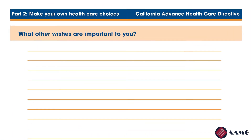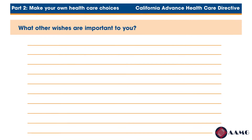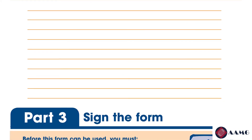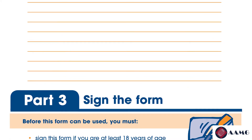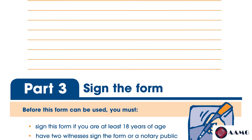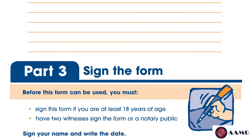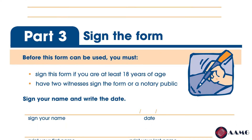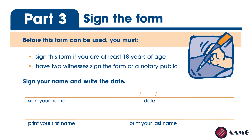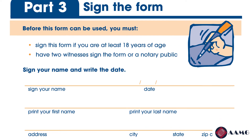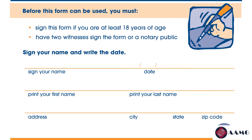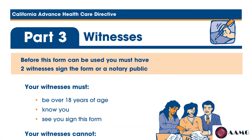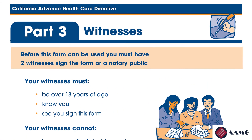Page nine is the end of part two — 'Make Your Own Healthcare Choices.' Here you may write down other wishes important to you not mentioned before, on the blank lines provided. This page also contains part three — the last and most important part — 'Sign the Form.' To use this form you must sign it. You must be at least 18 years old. In the blank space provided, sign the form, date it, print your first and last name, and fill in your address.